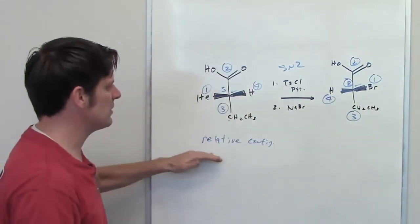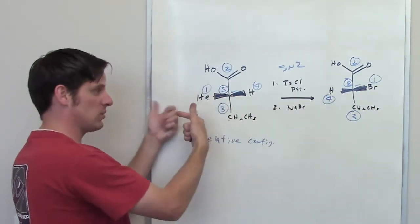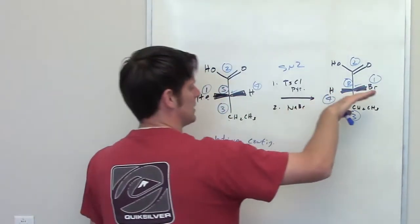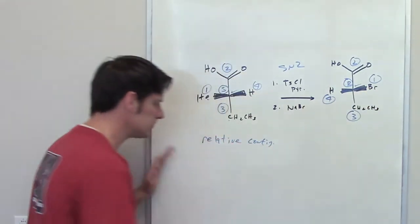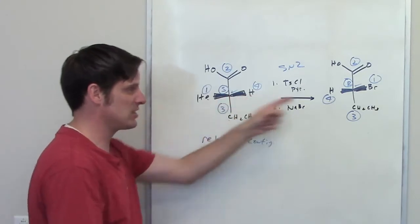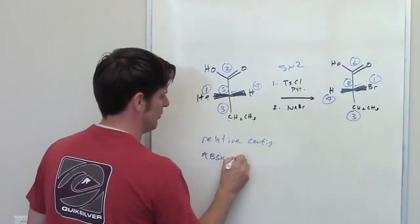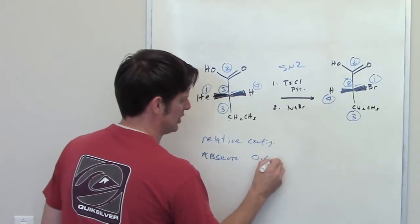So not only are the relative configurations of these two molecules changed, that means that the OH is pointing to the left or the right, which is the highest priority group. The highest priority group over here is pointing to the right. The absolute configurations have been changed as well. This one is S. That one is R. So I'll go ahead and write down absolute configuration. And it has also been swapped.